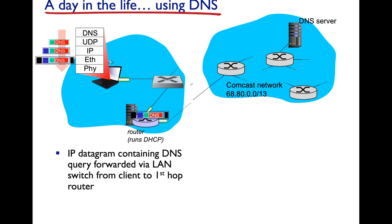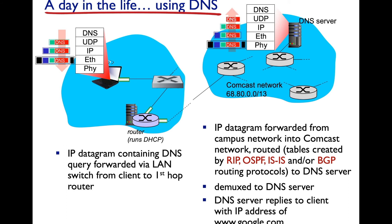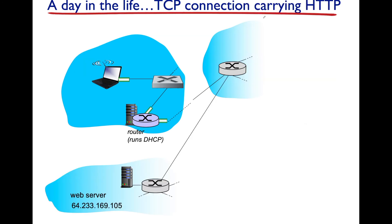The first-hop router receives the DNS query, examines the destination IP address, looks it up in its forwarding table, and sends it out the port toward the Comcast network. Using link-state or distance-vector routing, it knows to forward to the DNS server. The DNS server receives the query, sends it up the stack, performs a lookup, and sends back a response with the IP address for google.com. Now you have the destination IP and construct your HTTP request packet — using TCP.